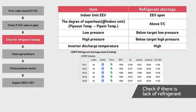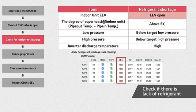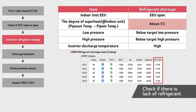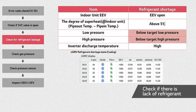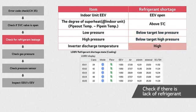In order to solve this problem, start by checking if the refrigerant is insufficient using LGMB. Through LGMB, you can also check the cycle. You can tell that the refrigerant amount is lacking when the indoor unit EEV is fully open and the degree of superheat at the indoor unit is above 5 degrees. Superheat is the difference between the pipe-out temperature and the pipe-in temperature of the indoor unit. Also, when both low and high pressure are below the target pressure for each, or the discharge temperature of the inverter is higher than usual, you can tell there is a lack of refrigerant.